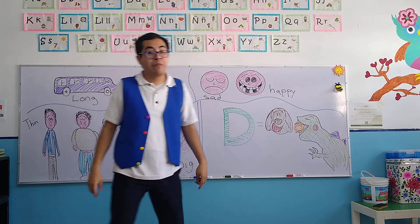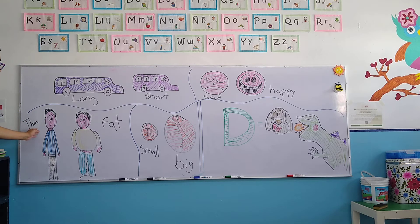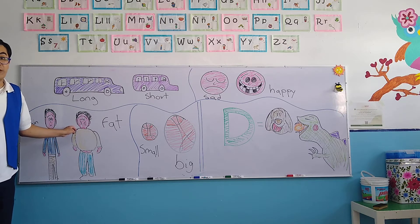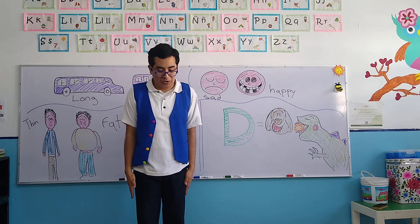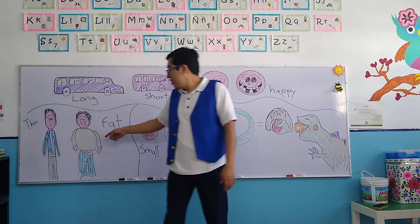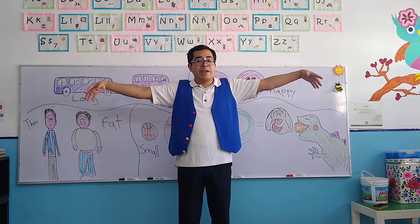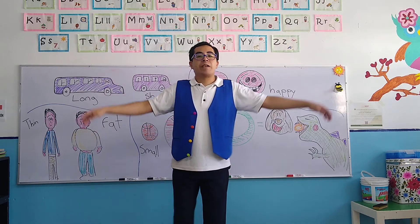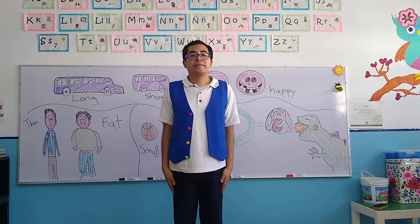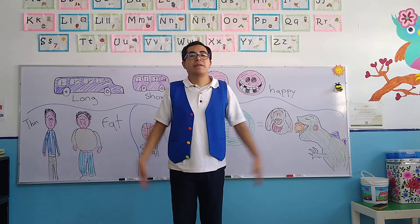Let's continue with the second example. Like we mentioned before, we have two people. One is wearing a blue sweater and the other is wearing a yellow sweater. The first one, the one with the blue color, is a thin person. The other person wearing a yellow sweater is a fat person. Now, please stand up once again. Repeat after me. Thin. Fat. Thin. Fat.